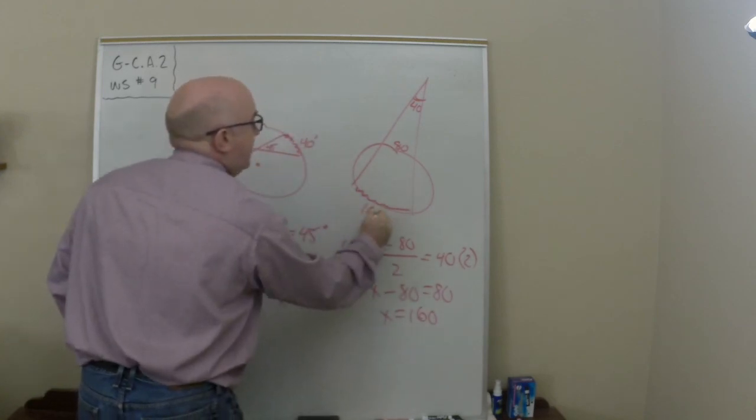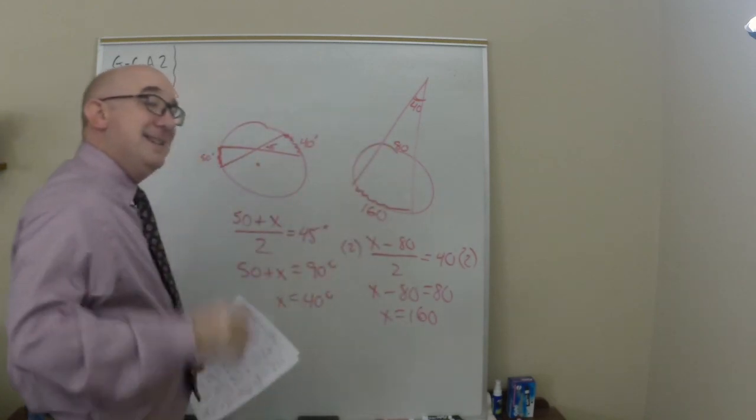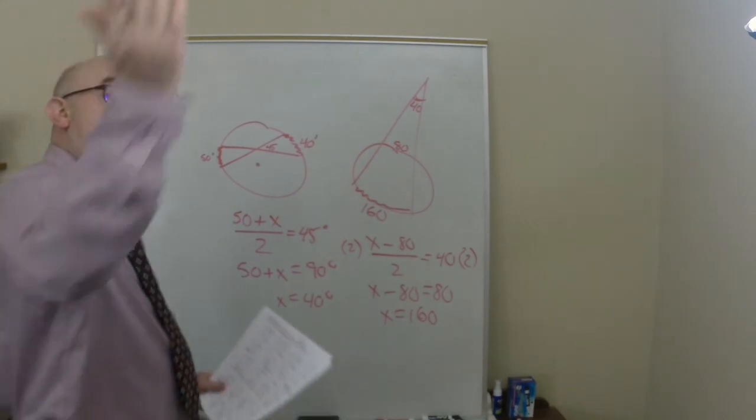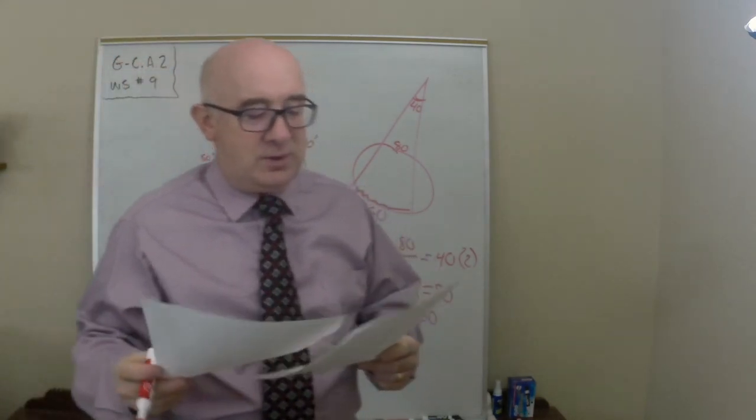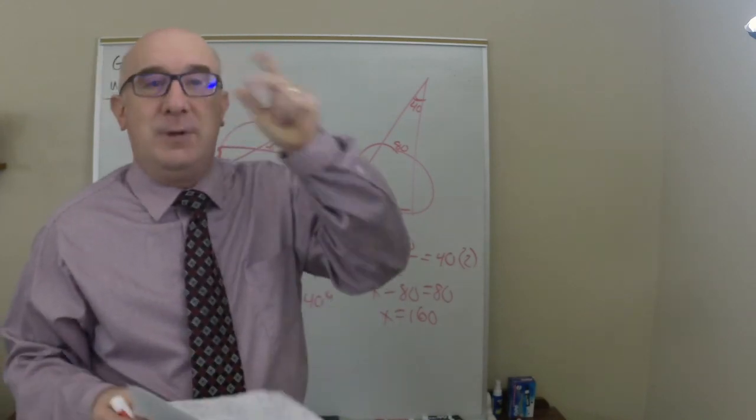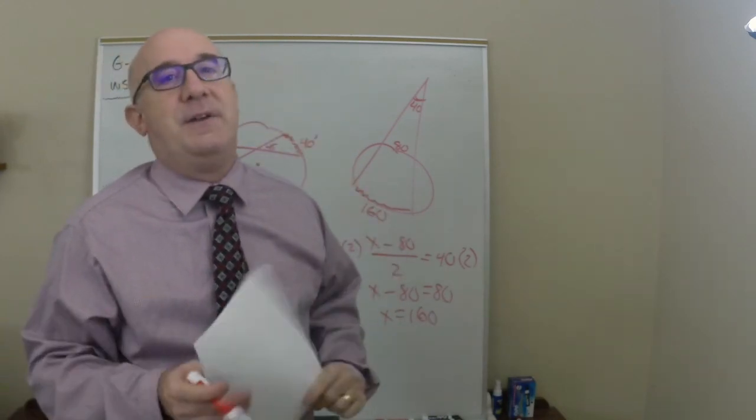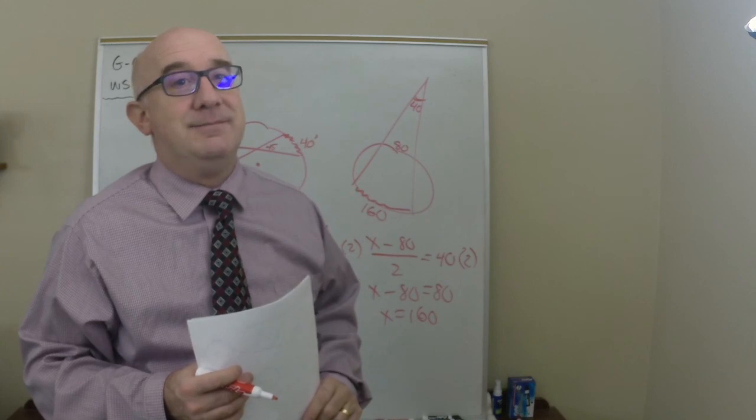Let's see if that makes sense. 160 minus 80 is 80, 80 divided by 2 is 40. I think they're mostly kind of like that. They do get more interesting than that, but that will definitely get you the gist of this lesson. Good luck.